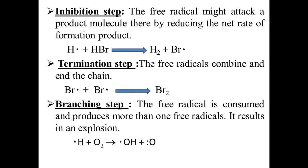Next is the termination step. In the termination step, free radicals combine and end the chain. Two bromine radicals combine to form a bromine molecule, and the chain comes to an end — there is no continuation of the chain. This is called the termination step.